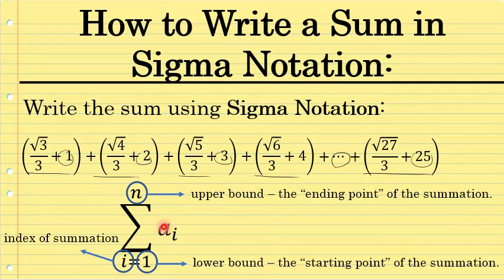Above the sigma is an N, which stands for the upper bound, the ending point of the summation. And then there's some expression to represent the sum from i equals 1 to N, some sort of an expression.